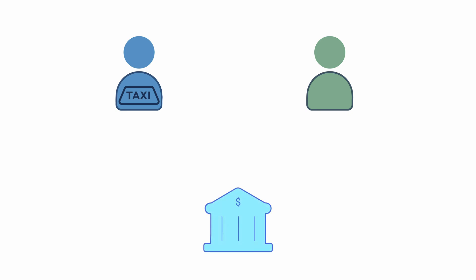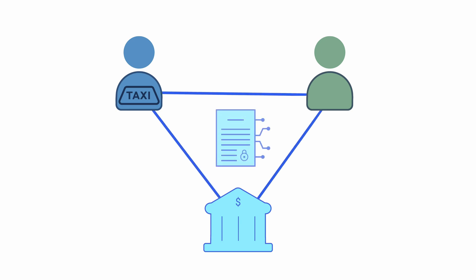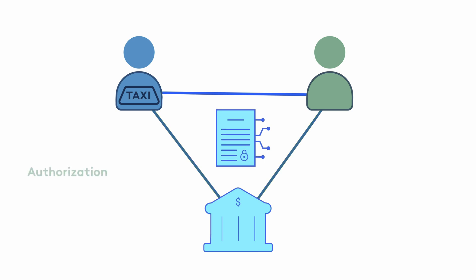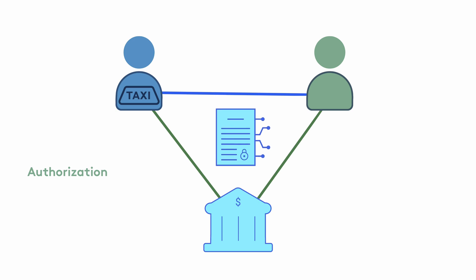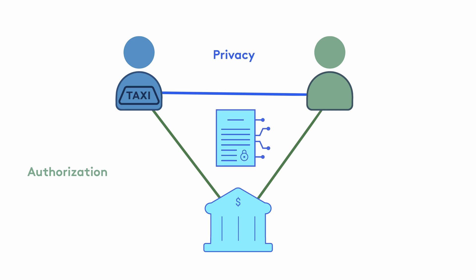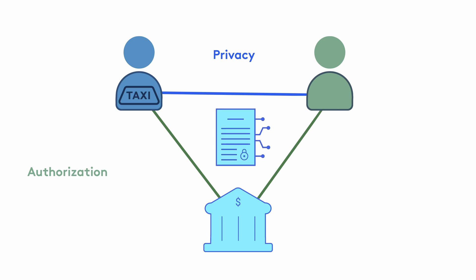Let's use the example of Alice and Bob, where Alice uses Bob's cab service. For now, we'll assume that Alice and Bob both have their accounts in the same bank. The contracts among these parties — Alice, Bob, and the bank — must specify who can do what, that is, the authorization. Alice and Bob can operate their own accounts but not anyone else's. The bank can perform certain limited operations on its customers' accounts. In terms of privacy — who can see what — the bank can see both their accounts. However, Alice should not be able to see what is in Bob's account, and Bob should not see what is in Alice's account.